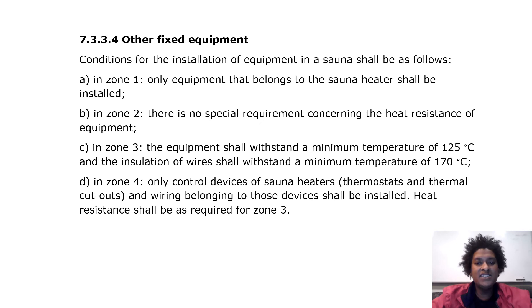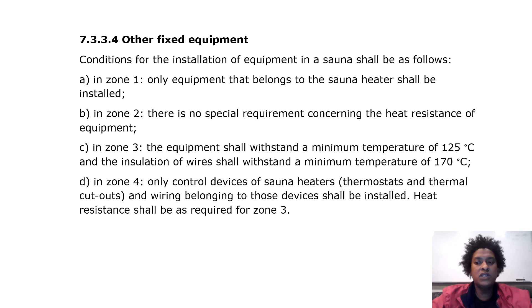In zone 3, the equipment shall withstand a minimum temperature of 125 degrees Celsius, and the insulation of wires shall withstand a minimum temperature of 170 degrees Celsius. In zone 4, only control devices of sauna heaters, thermostats, thermal cutouts, and wiring belonging to those devices shall be installed. Heat resistance shall be as required for zone 3.